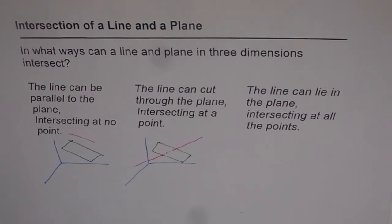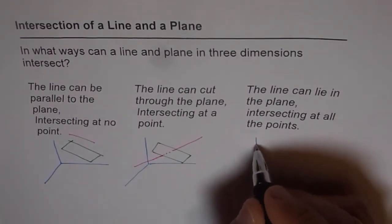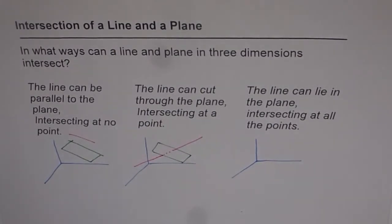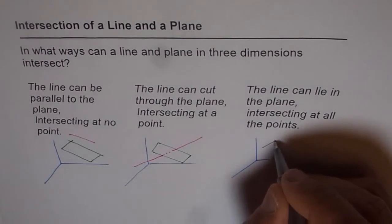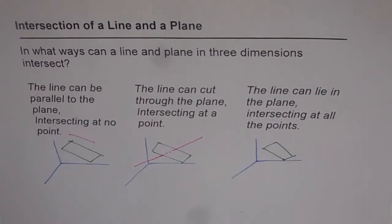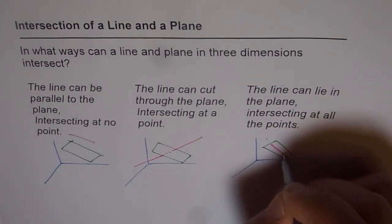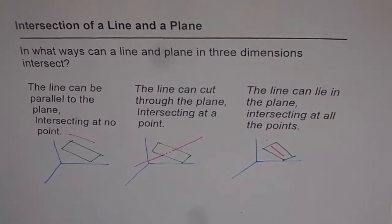And the third case is that the line could be contained in the plane itself. So the line could be in the plane. So that is the third case. So we have a plane here and the line is in the plane, inside the plane itself. So these are the three conditions which we have when we are considering a line and a plane.